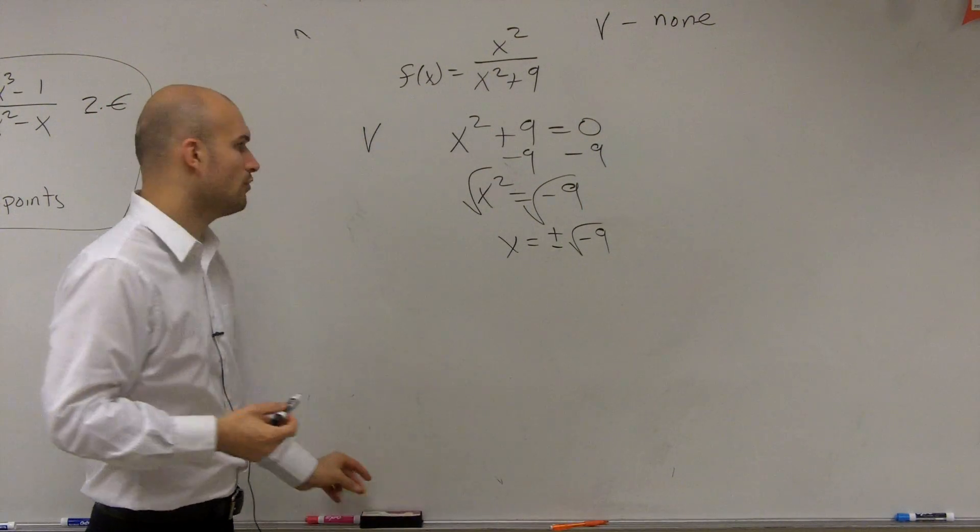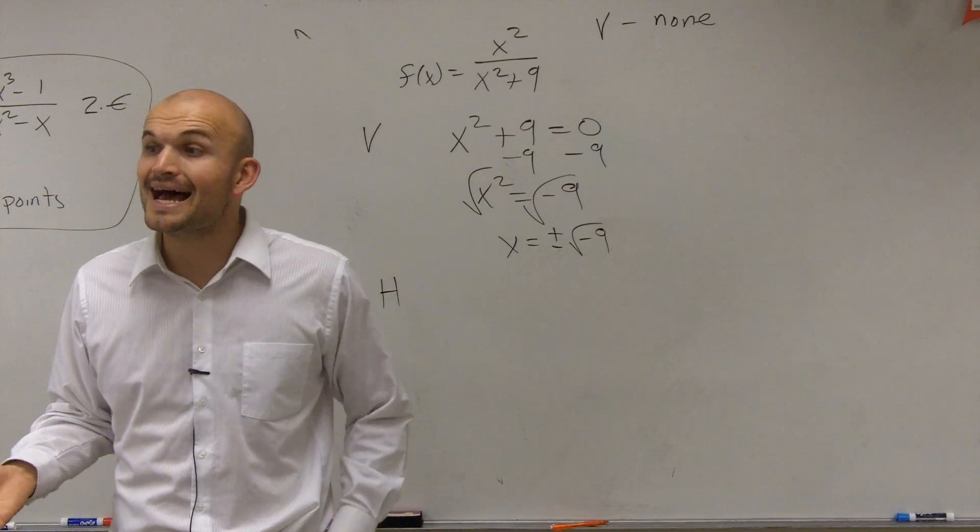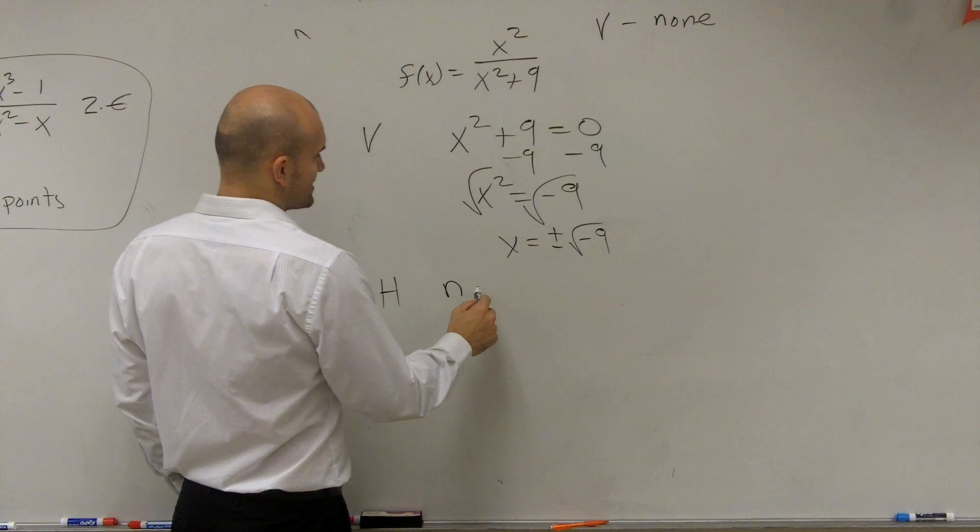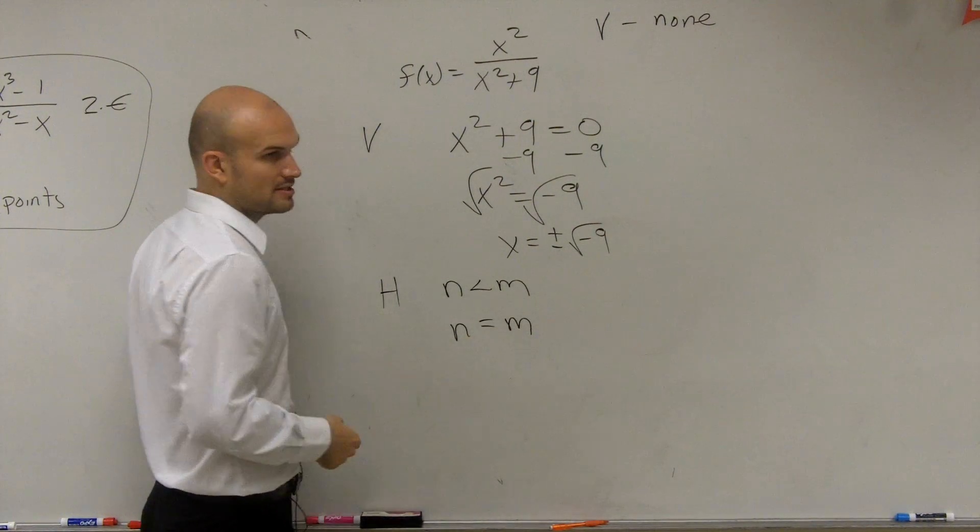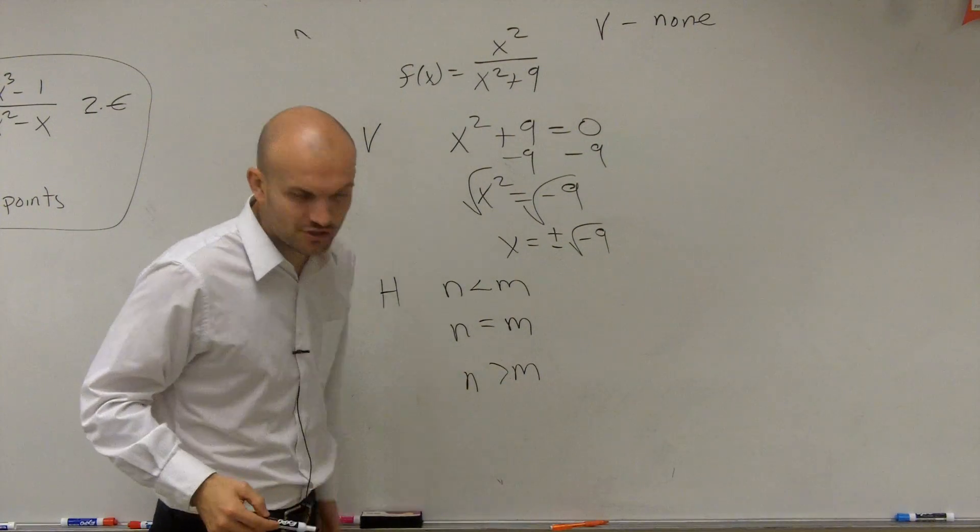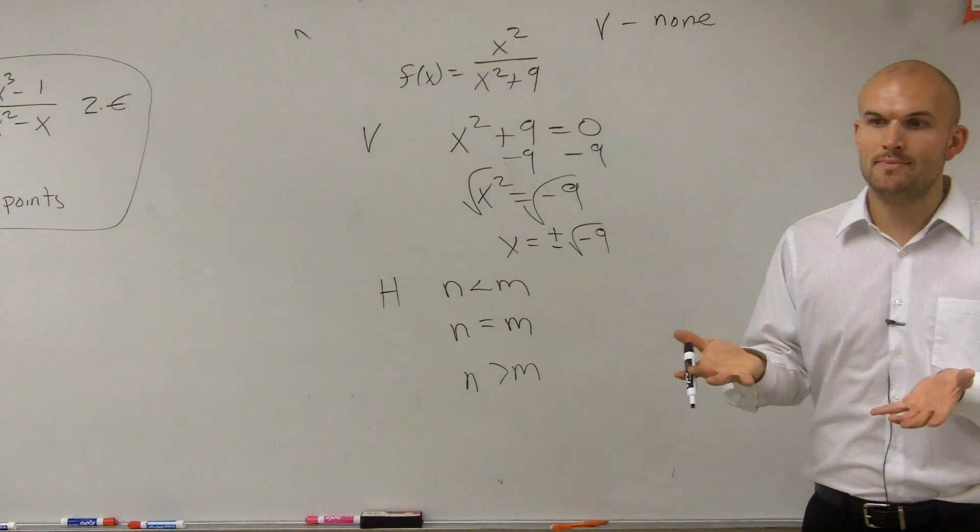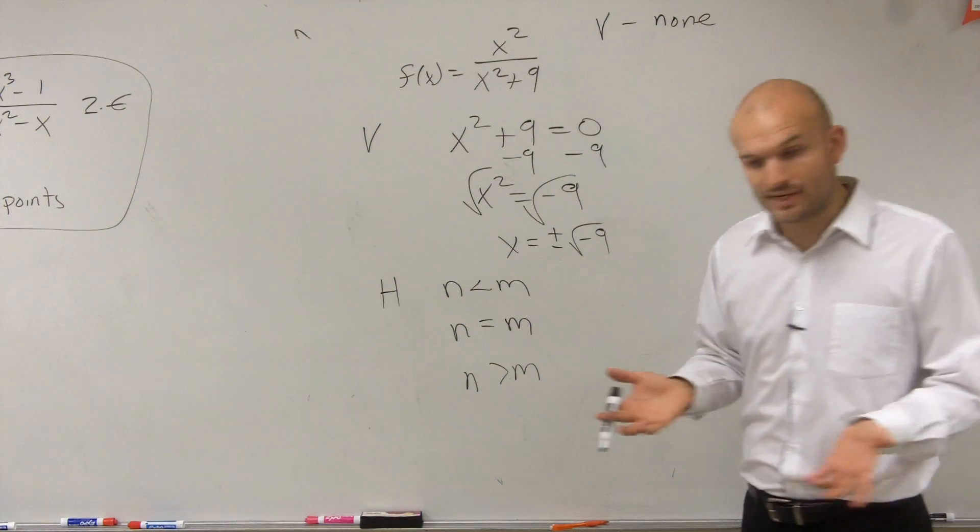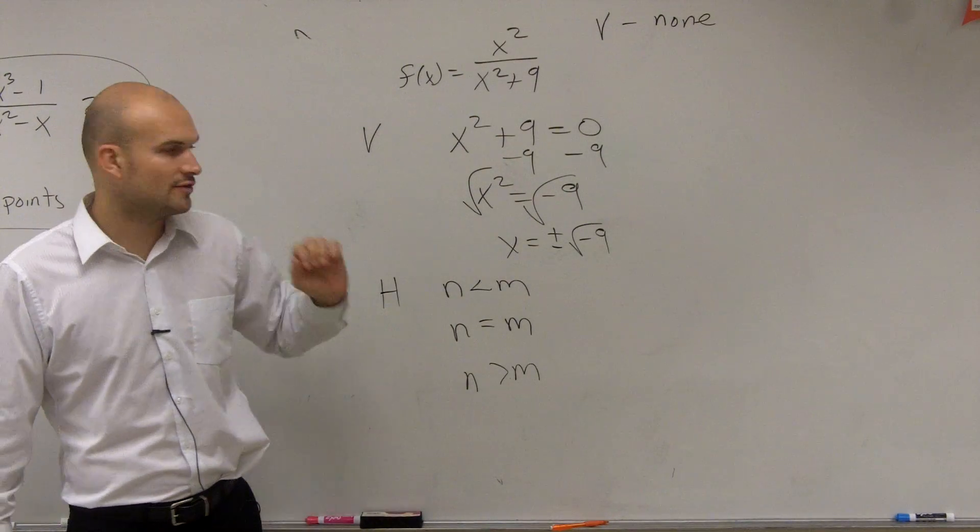Now the next thing is, let's look at horizontal asymptotes. So the horizontal asymptotes, ladies and gentlemen, there's a test. It's called the horizontal asymptote test. And what we do for the horizontal asymptote test is we take a look at the exponents, or the degrees, of your two polynomials, right? Remember, a rational function, the rational functions that we're going to be dealing with in this class, is one polynomial over another polynomial. Polynomials all have a degree.